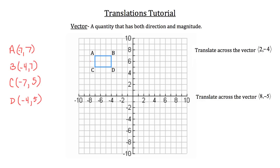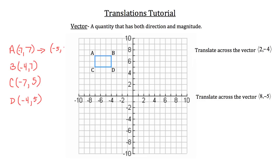Now we want to translate this rectangle across the vector (2, -4). For each of the x coordinates of points ABCD, I'm going to add 2 to the original x coordinate. For point A, the x coordinate is -7, and -7 plus 2 is -5. We're also translating the y coordinate by -4, so 4 down. The y coordinate of point A was 7, and 7 minus 4 is 3. So the new A coordinate is at (-5, 3).